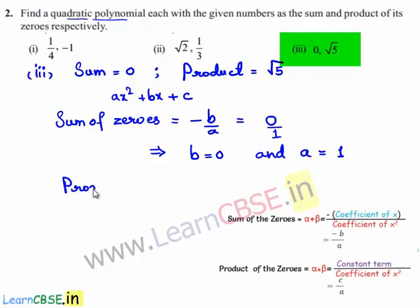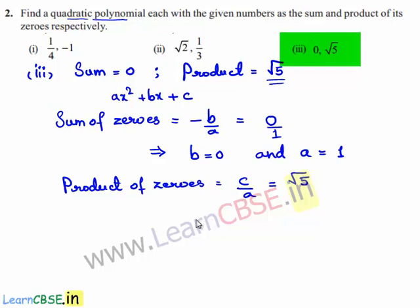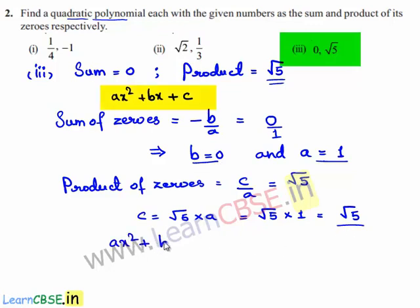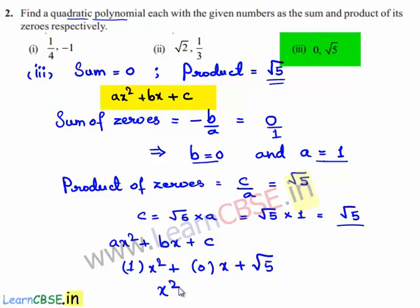The product of the zeros is equal to c/a, and the given product is √5. So we can write c = √5 · a by cross multiplication. Since a = 1, c = √5. Finally, a = 1, b = 0, and c = √5. Substituting in ax² + bx + c, we get x² + √5.